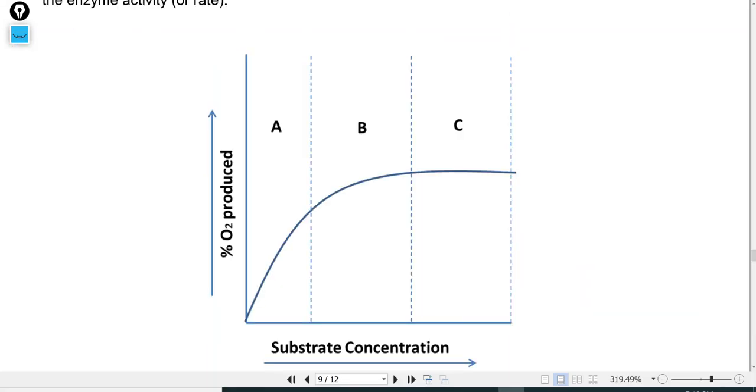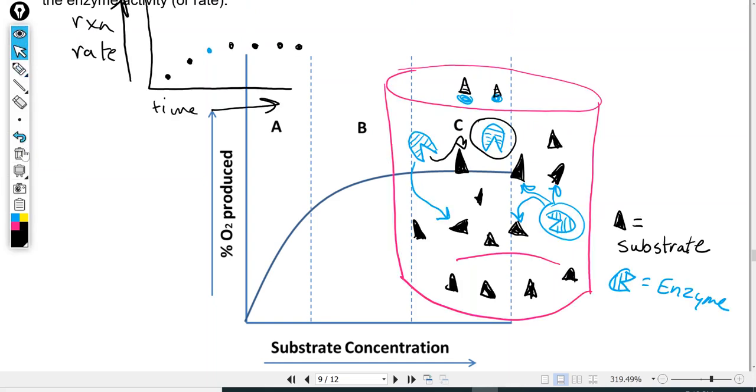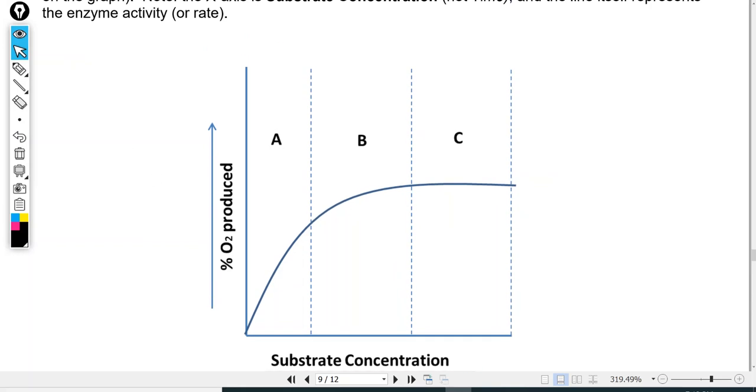And so that's what this last kind of thought question is asking you. So this over here is the reaction rate, how much oxygen is produced. And on the bottom axis we have, how many little black triangles are we adding? So think about which spot, which column, A, B, or C, shows best what happens when you keep adding substrate, but the amount of enzymes stays the same.